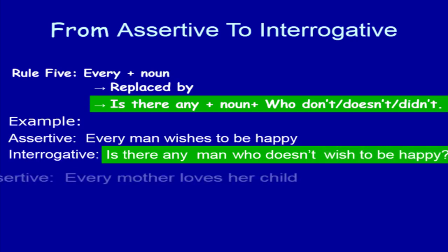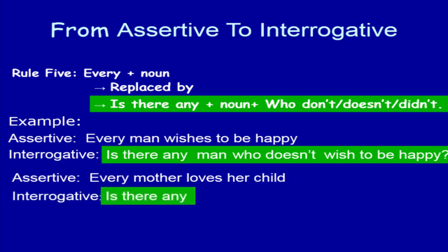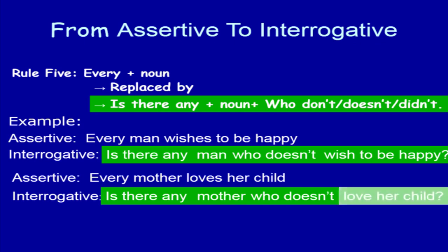Look at another example: 'Every mother loves her son.' In place of 'Every,' we write 'Is there any?' Then write the noun, then 'Who does not' because the subject is third person singular number and the verb is present simple tense. Then write the rest part of the sentence. After the sentence, use the sign of interrogation.